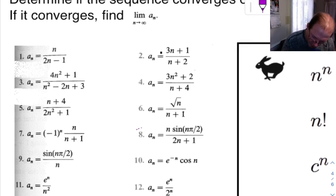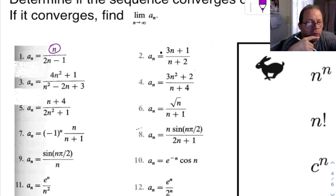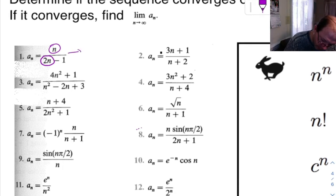So let's start with 1. On 1 here, the dominant term on top is n. Well, it's the only one, so it has to be the dominant term. On the bottom, we've got 2n and we've got negative 1, so a linear and a constant. The linear is going to be the dominant term there. So as n goes to infinity, this thing is going to go to 1 half. So that tells us that the sequence converges to 1 half.